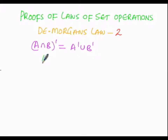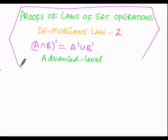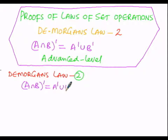We have to prove this condition at the advanced level. In order to prove this condition, we have to consider two sets, A and B. De Morgan's law number 2 states that A intersection B whole complement is equals to A complement union B complement. We are going to prove this condition by means of the element-wise proof.